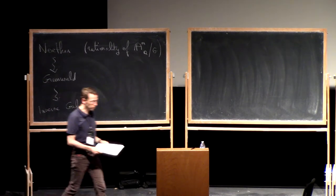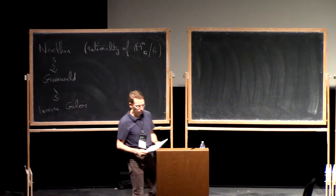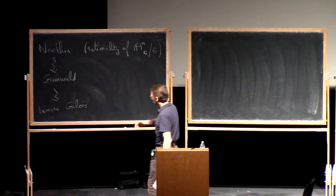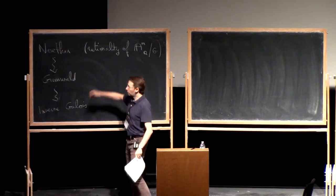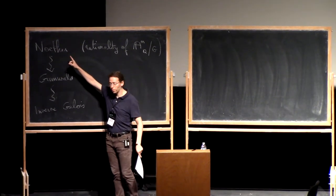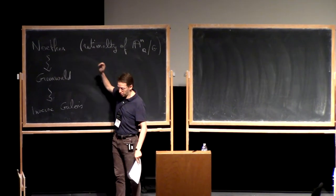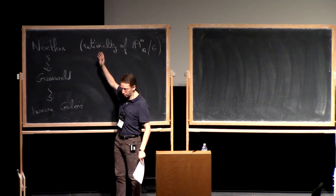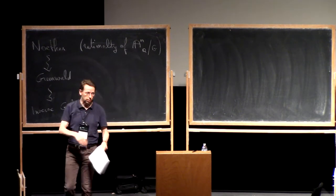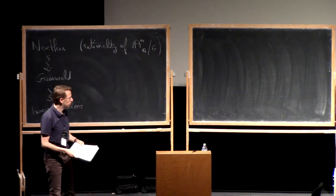I'm not going to talk about this today. Also in the notes, I explained that there are counter-examples to Noether's problem over the complex numbers — of course, for non-abelian groups.